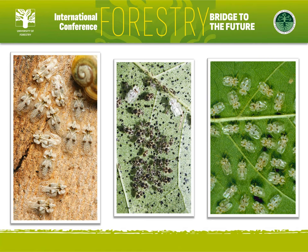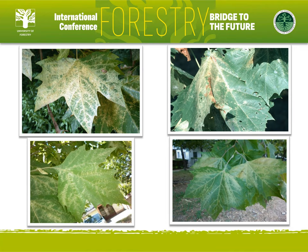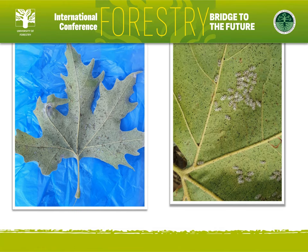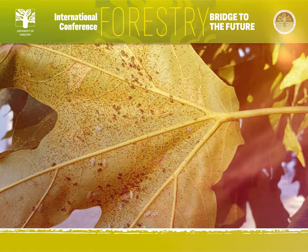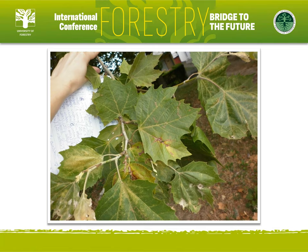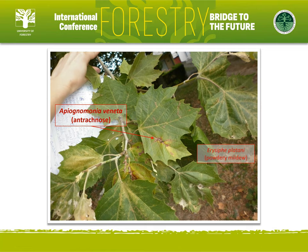All nymph stages feed by sucking the mesophyll of the inhabited leaf, as does the adult. The symptoms are visible on the upper side as white stippling, chlorosis, and typical bronzing. On the underside, vast numbers of nymphs, adults, shed casts of nymphs, and fecal droppings are easily visible to the naked eye. Leaves and trees invaded by the lace bugs are often also infected by the pathogenic fungus Apiognomonia veneta, causing anthracnose, and Erysiphe platani, causing powdery mildew.